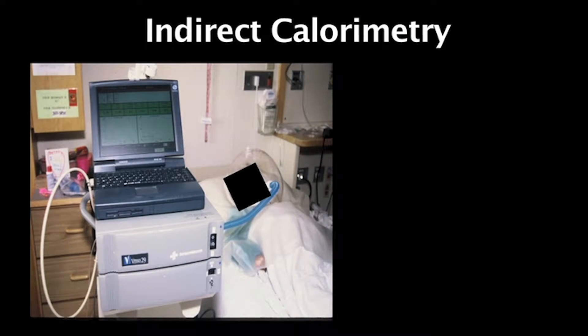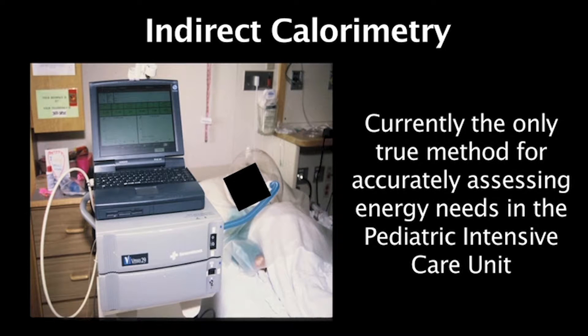In such a setting, indirect calorimetry — shown on the left side of the slide using a metabolic cart — remains the only true method of accurate assessment of energy needs in the pediatric ICU. Details of indirect calorimetry, including the device, the technique, and some of its limitations, will be presented in another session.